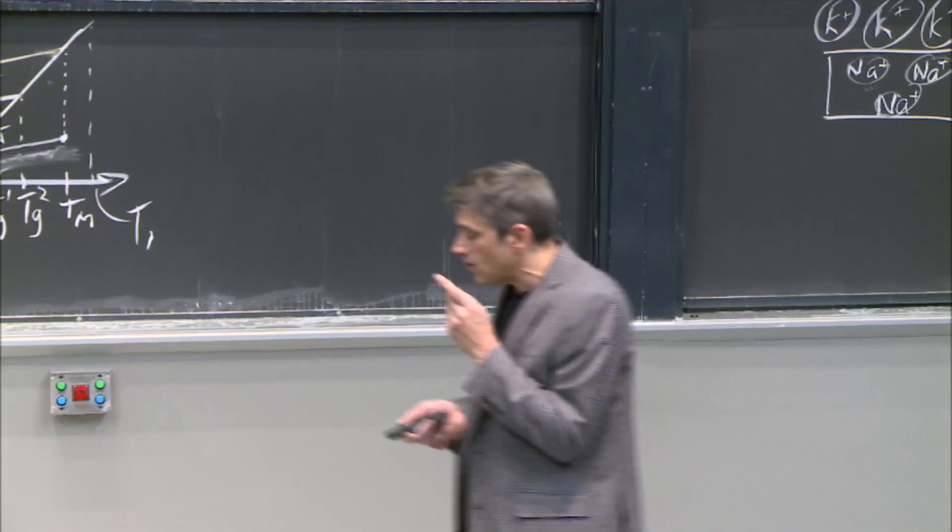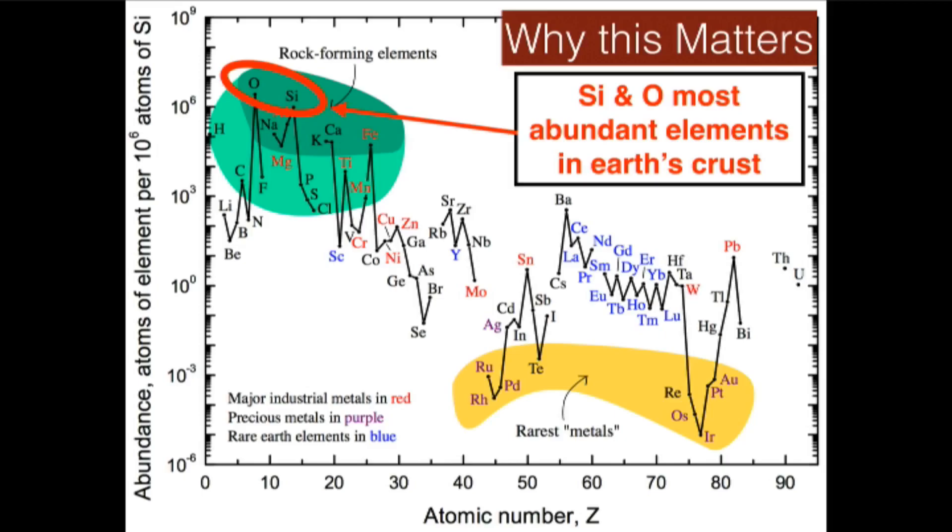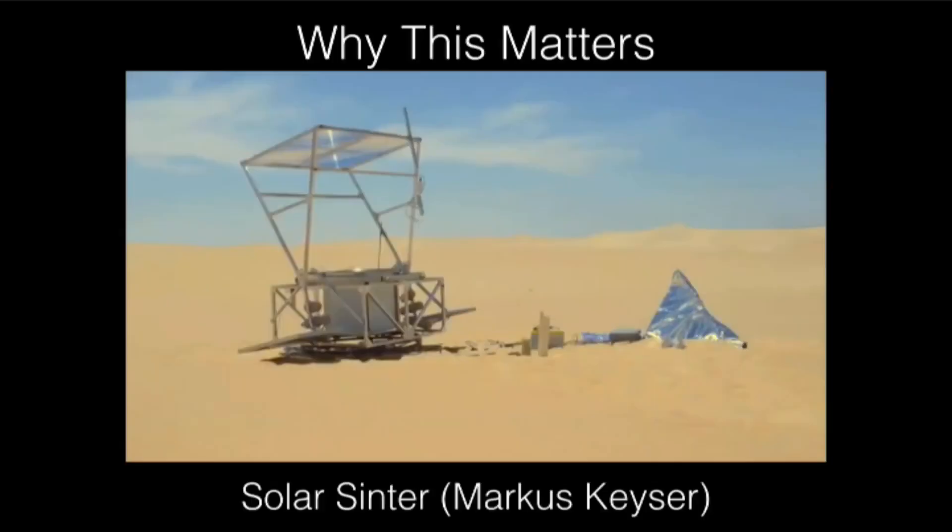So we can now look at materials like this, these superabundant materials, and we can completely rethink them. And I'll give you one example. It's already a few years old, but I think it's just a really cool idea, which is called the solar sinter.